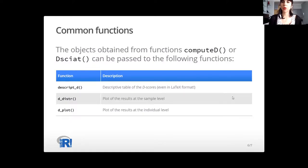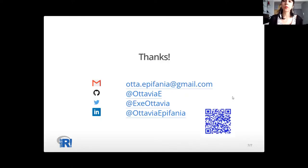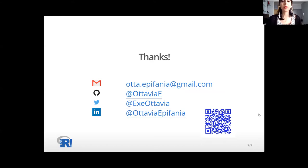Finally, we also have common functions for both the IAT and Single Category results, which summarize the results of these measures in descriptive tables or plot their distributions. Thank you so much for your attention. This QR code will redirect you to the CRAN page of my package. Thanks again for your attention and please contact me if you have any further questions.